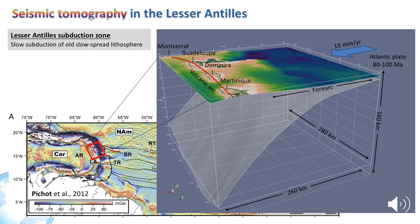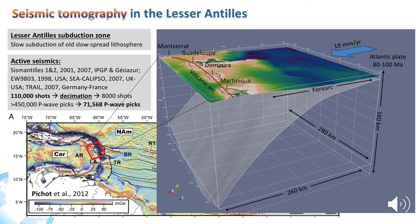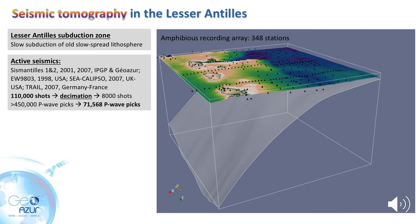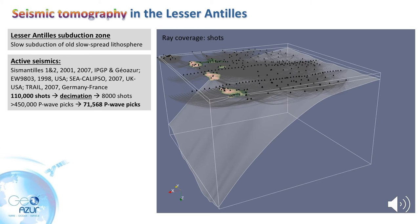Zooming in on the study area, we see that it extends from Martinique in the south to Montserrat in the north. Notice the subducting Atlantic plate, deep beneath the Caribbean plate. My study is based on a series of active source seismic experiments carried out in the late 90s and the years 2000s. They provide a total of almost half a million P-wave travel times. These were recorded on an amphibious array of ocean bottom seismometers and land stations. This is the ray coverage from the active source data, showing that it samples quite well the crust of the overriding plate, but it cannot sample the mantle wedge and the slab.